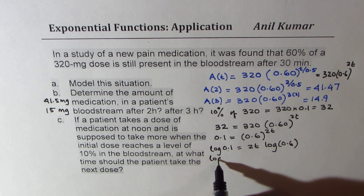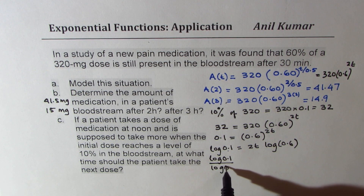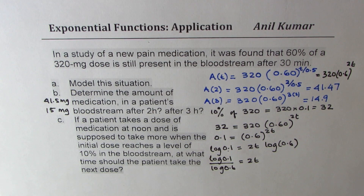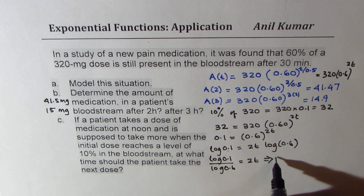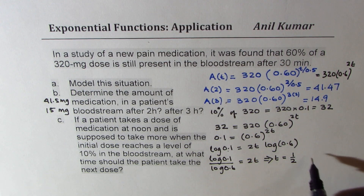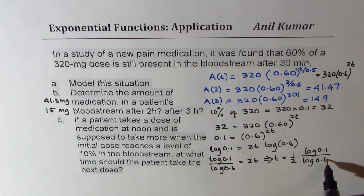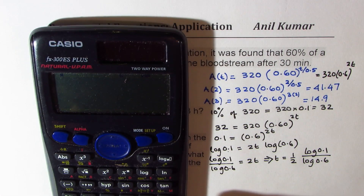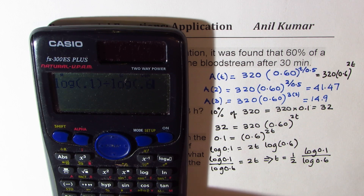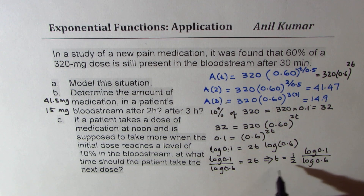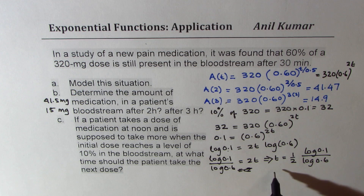Isolating T, we get T equals half of log(0.1) divided by log(0.6). Let's calculate: log(0.1) divided by log(0.6), and then divide by 2. So we get T equals 2.25 hours.